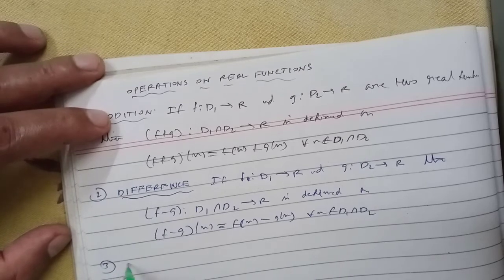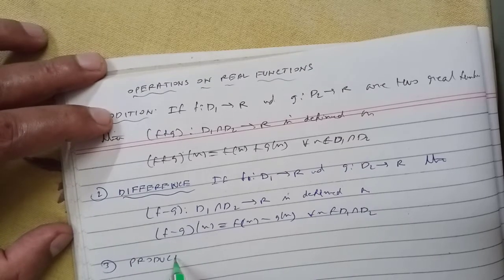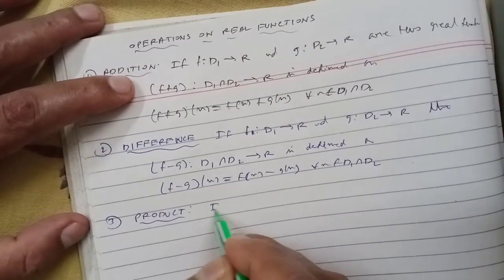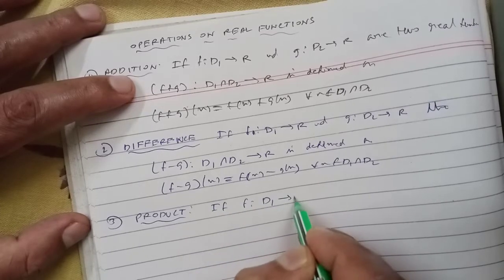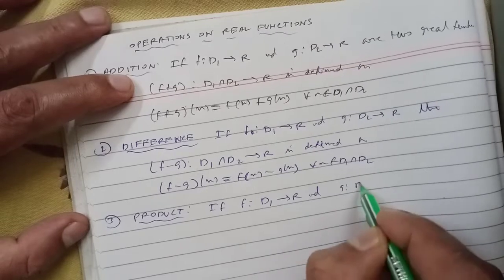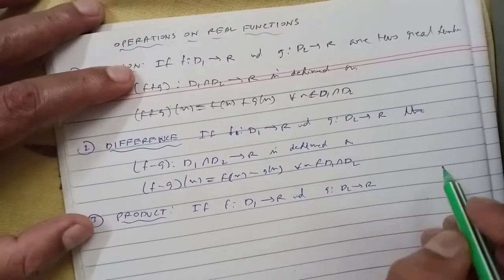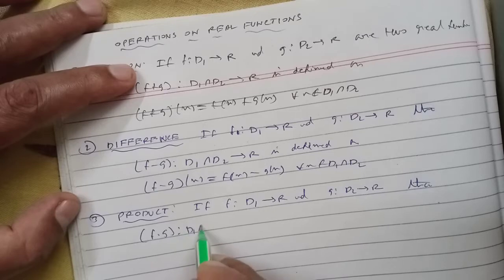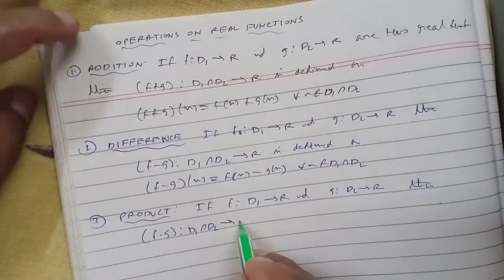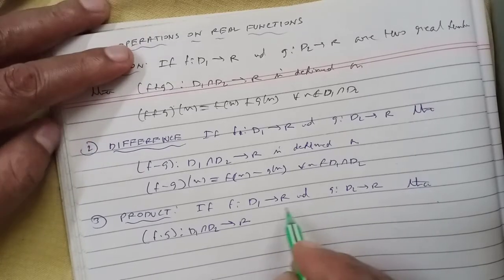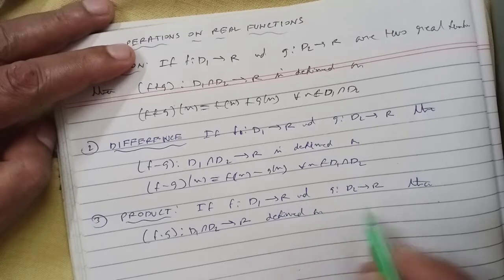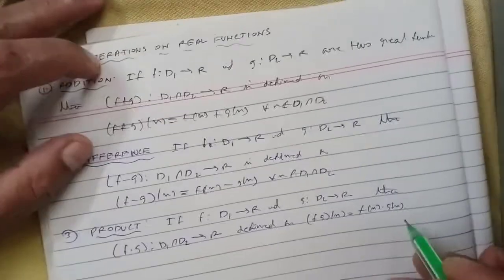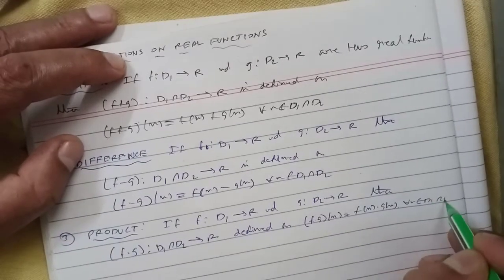Next, product. If f is a mapping from d1 to r and g is a mapping from d2 to r, then their product f into g is a mapping from d1 intersection d2 to r, defined as (f into g)(x) equals f(x) into g(x) for all x belonging to d1 intersection d2.